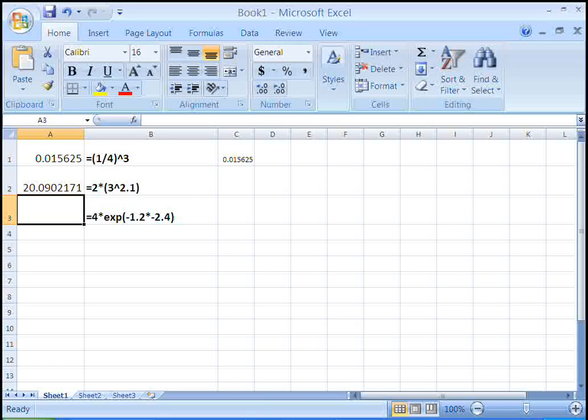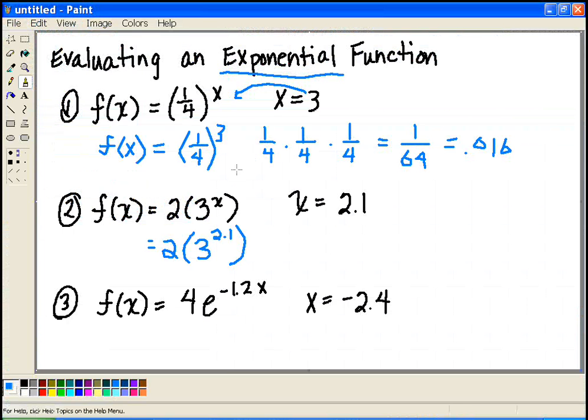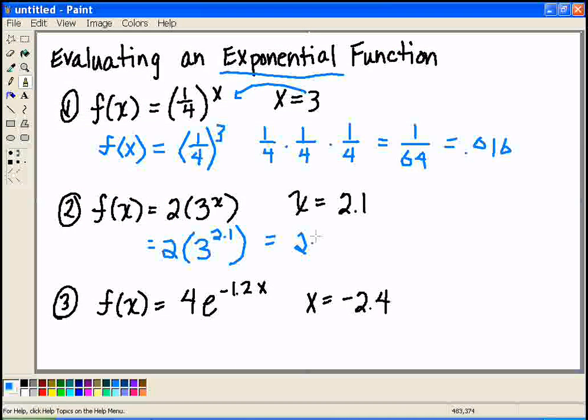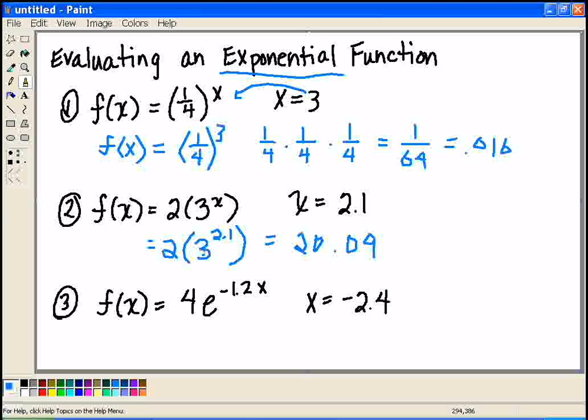We had guesstimated approximately 18, so we're very close. So it's 20.09. And again, I just want to point out, the only thing we raise to the 2.1 is we raise 3 to the 2.1 before we multiply it by the 2. So if you're trying this with your calculator, remember, raise 3 to the 2.1 before you multiply it by the 2.